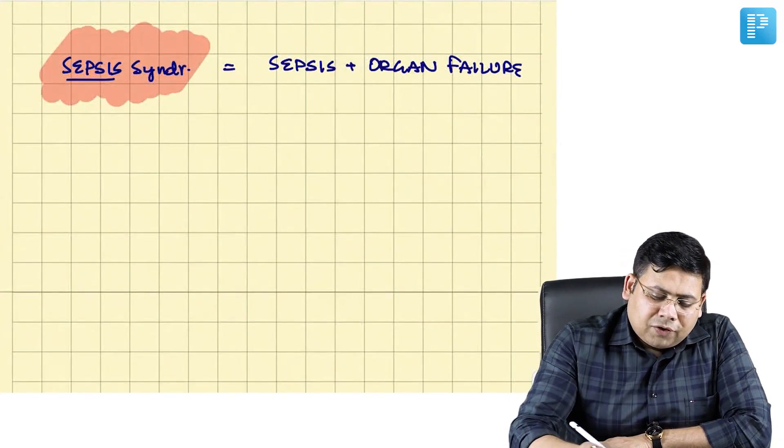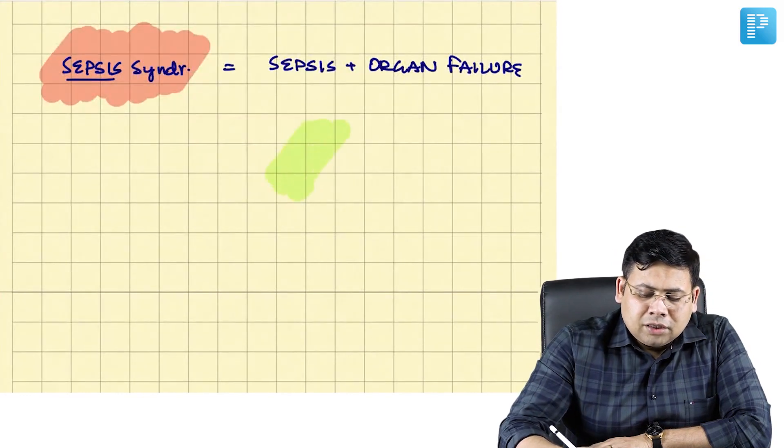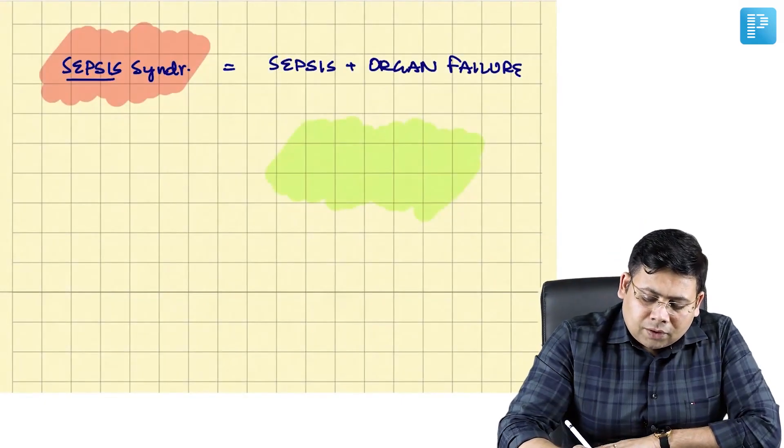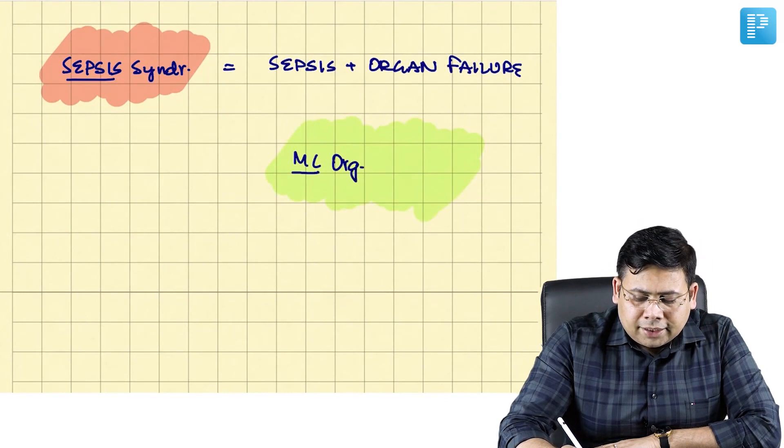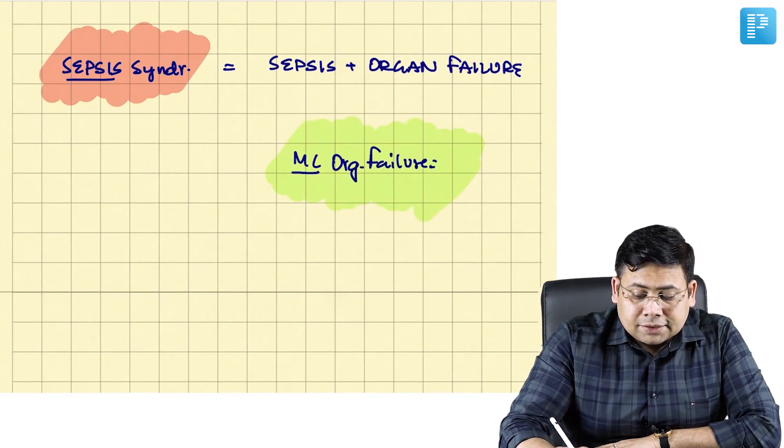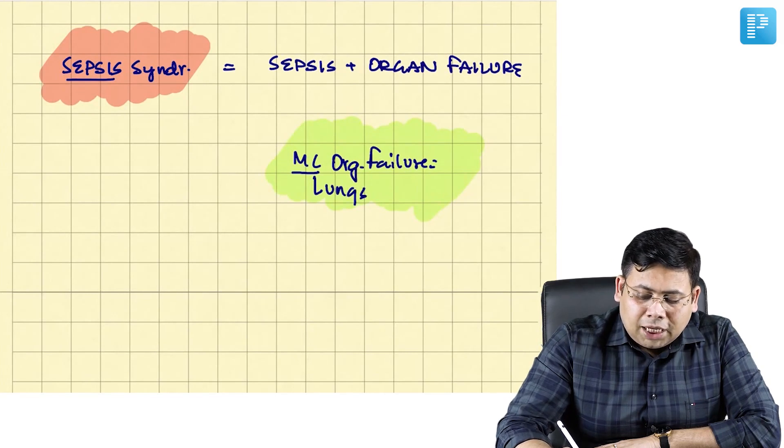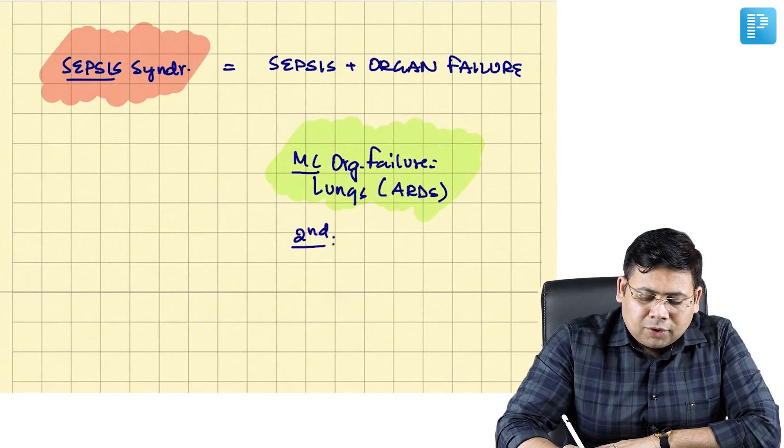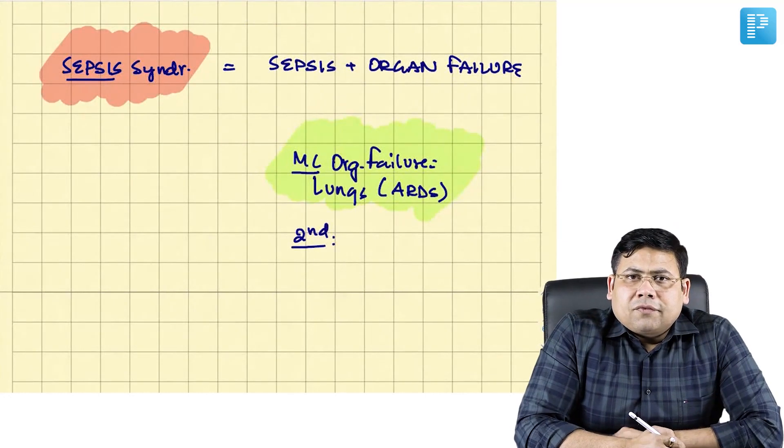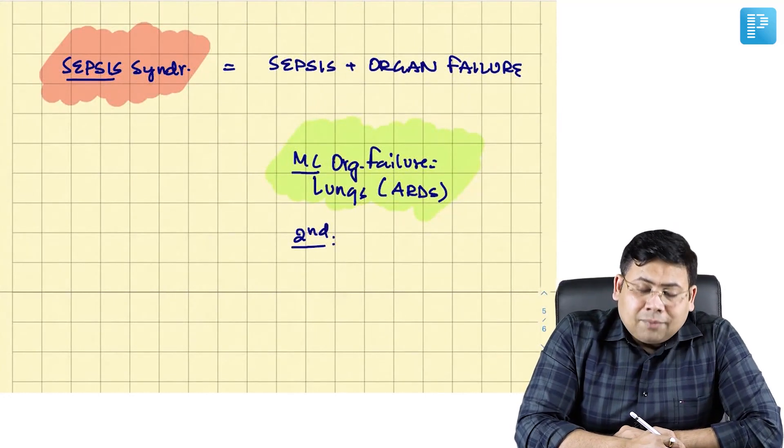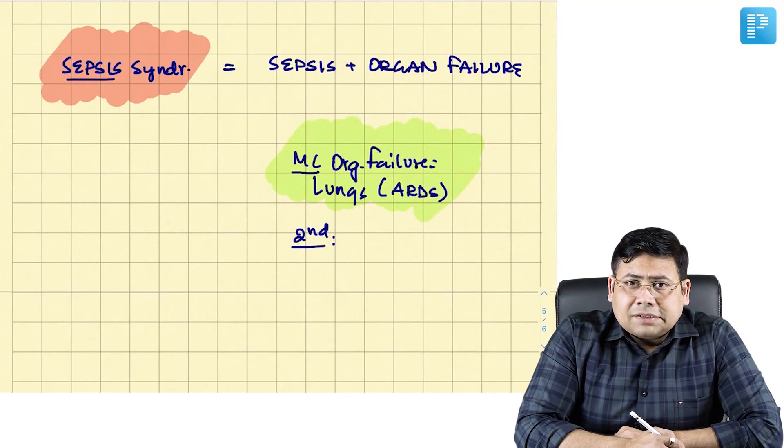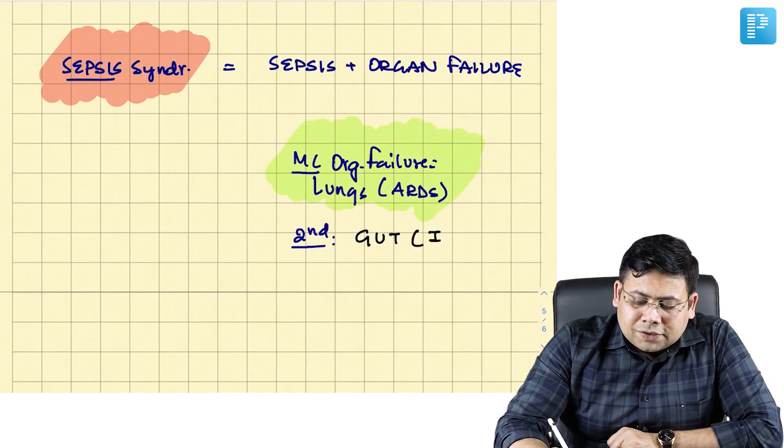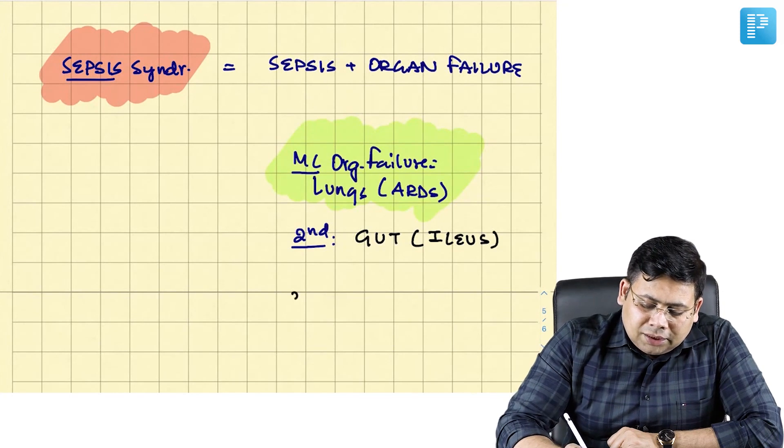Now when we talk about organ failure, there are two to three important questions here. What is the most common organ failure seen? The most common organ failure is lungs, and what do you see in lungs? It is ARDS. After lungs, the second most common organ failure is gut. What do you see in gut? You see ileus.